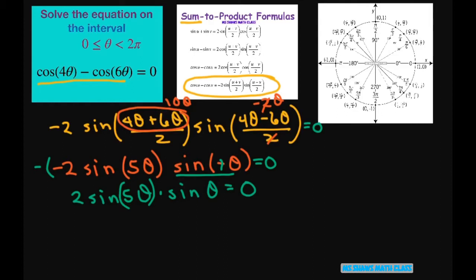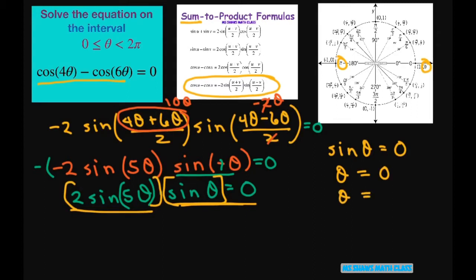Now all we have to do at this point is split it up. So we're going to set each of these to equal 0. For this one we have sine of θ equals 0. And our y is 0 at 0 and π. So we just have θ equals 0 and θ equals π.